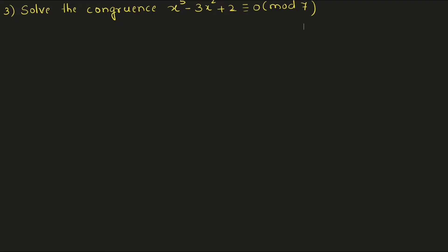Hello students, welcome to today's class. In today's class, I am continuing the polynomial congruences examples. Let us solve this example: solve the congruence x raised to 5 minus 3x squared plus 2 congruent to 0 mod 7.